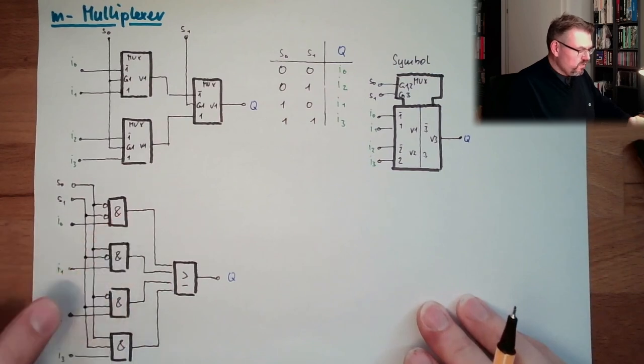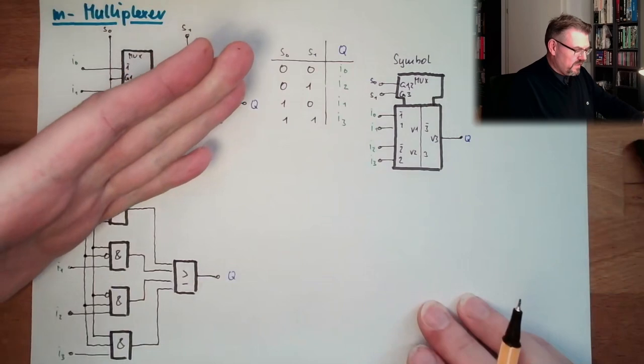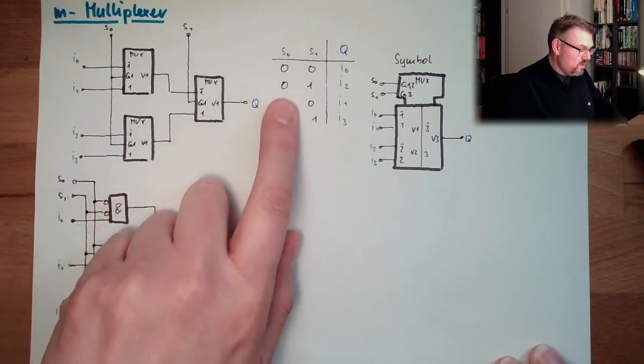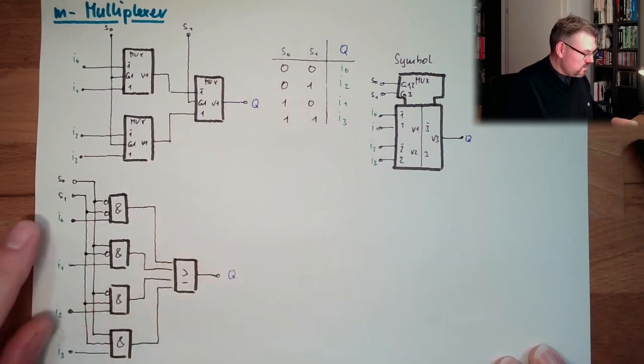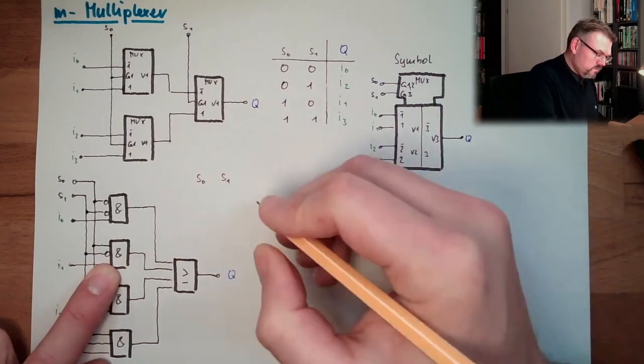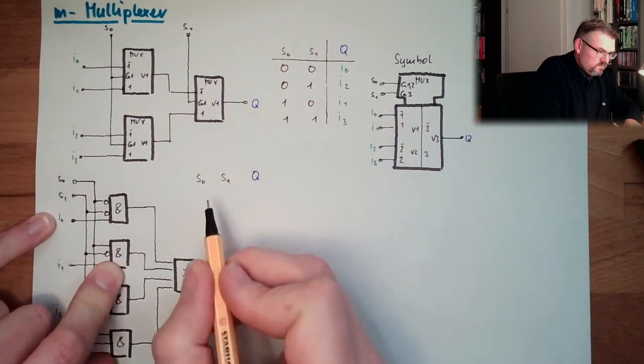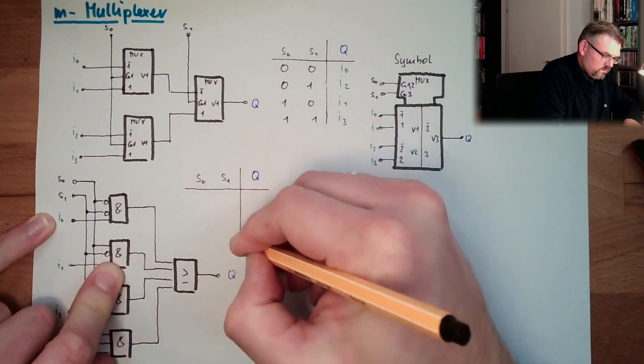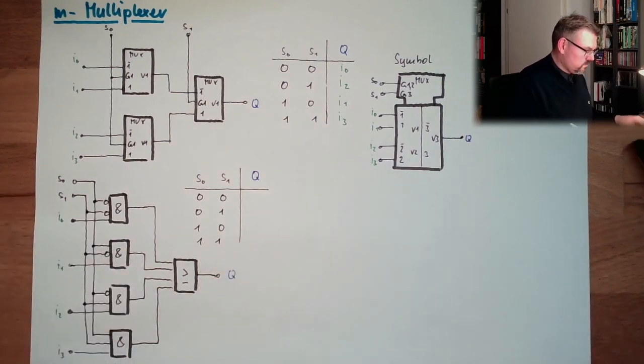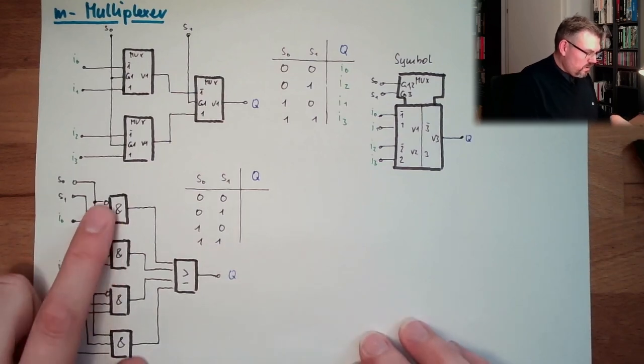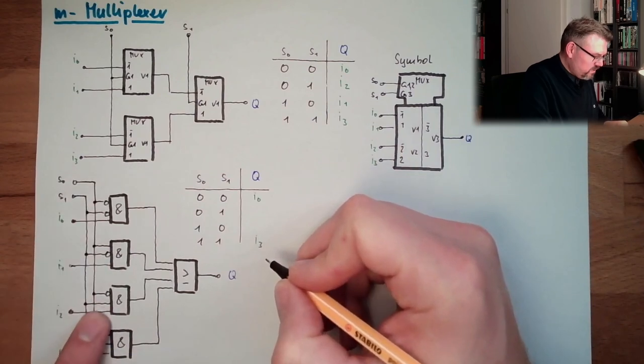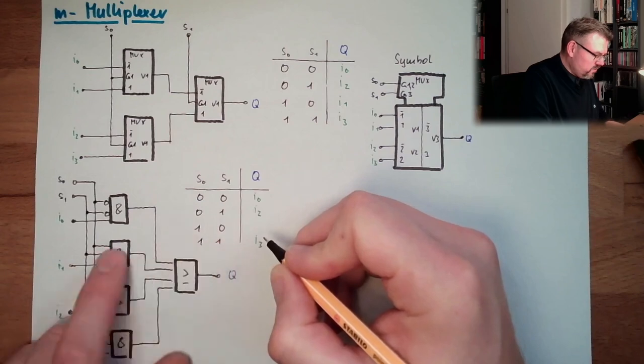So here I0 will only appear at the output if S1 and S0 is 0. Exactly like this. So here I1 will appear at the output of this AND block if S0 is 0 and S1 is... So let's make all the table S0, S1 and Q. 0, 0, 0, 1, 1, 0, 1, 1. So here, if both are 0, we will appear I0. If both are 1, we will appear I3. If this is S0, here is I2. And if S1 is 0, here is I1.